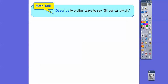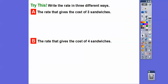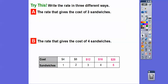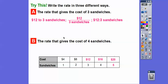Describe two other ways to say $4 per sandwich. One way is to say $4 for each sandwich, and another way is $4 for every sandwich. Now write the rate in three different ways for three sandwiches and for four sandwiches. Three sandwiches cost $12: in words, $12 for three sandwiches; as a fraction, $12 per three sandwiches; as a colon, $12 for three sandwiches. Four sandwiches cost $16: $16 to four sandwiches in words, $16 to four sandwiches as a fraction, and $16 to four as a colon.